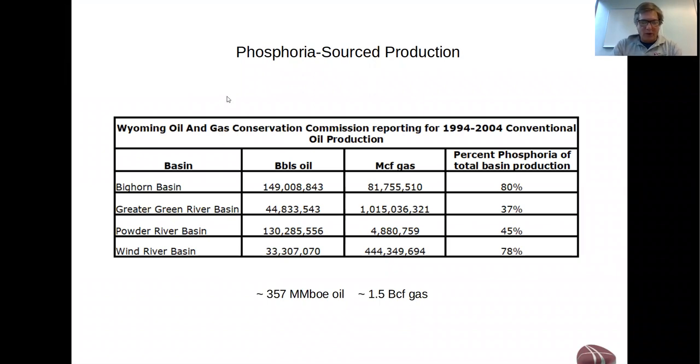As I mentioned in the beginning, the phosphoria is the basis for one of the biggest petroleum systems in North America, and it is a world-class system. This slide summarizes 10 years of production data from four basins in Wyoming. These numbers were compiled by the U.S. Geological Survey for production that occurred between 1994 and 2004. On the right, you see the percentage of production that's interpreted to have come from the phosphoria, including both liquid hydrocarbons in millions of barrels of oil equivalent and BCF of gas. Bottom line, over this 10-year period, the phosphoria is interpreted to have produced or sourced 357 million barrels of oil and about one and a half billion cubic feet of gas.